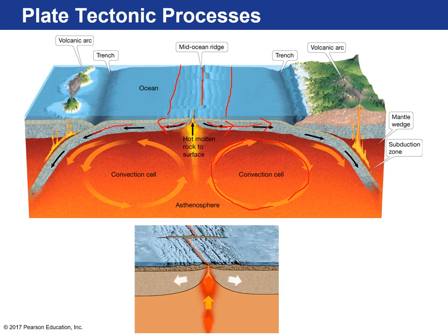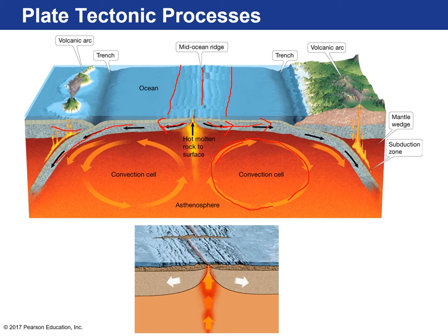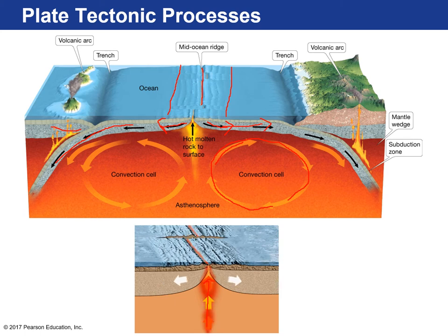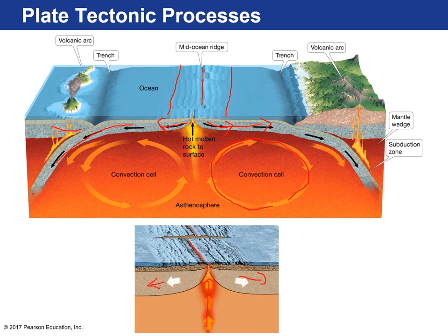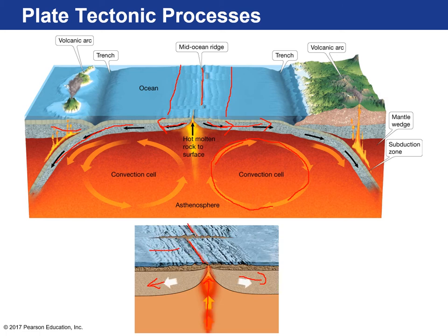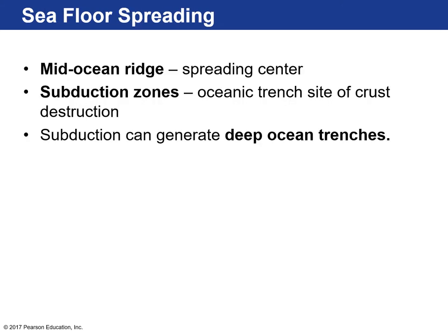As two plates collide, sometimes plates sink while others stay above — they're more buoyant. Here's the idea of seafloor spreading: you have upwelling mantle, two plates moving in opposite directions, and new volcanism occurs at the bottom of the ocean. New ocean plates are created as these plates move away from each other. They named this feature the mid-ocean ridge because it's essentially a mountain — a ridge — found at the bottom of the ocean.